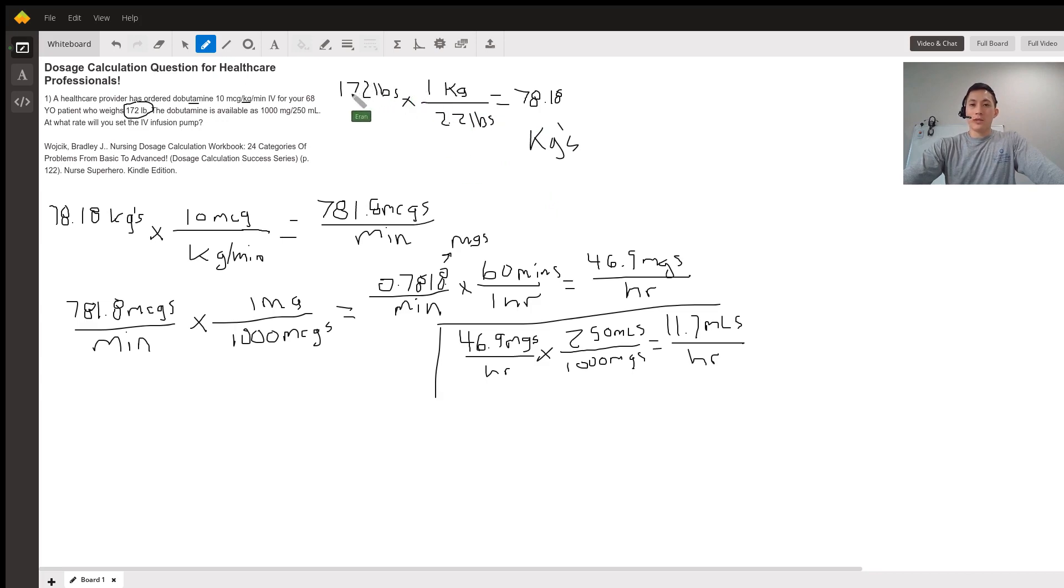We have 172 pounds. Technically, this is also a fraction. Every number in mathematics has a one under it. We just don't write it there because it's tedious. But in this case, for the purposes of the example, I have a one under 172.